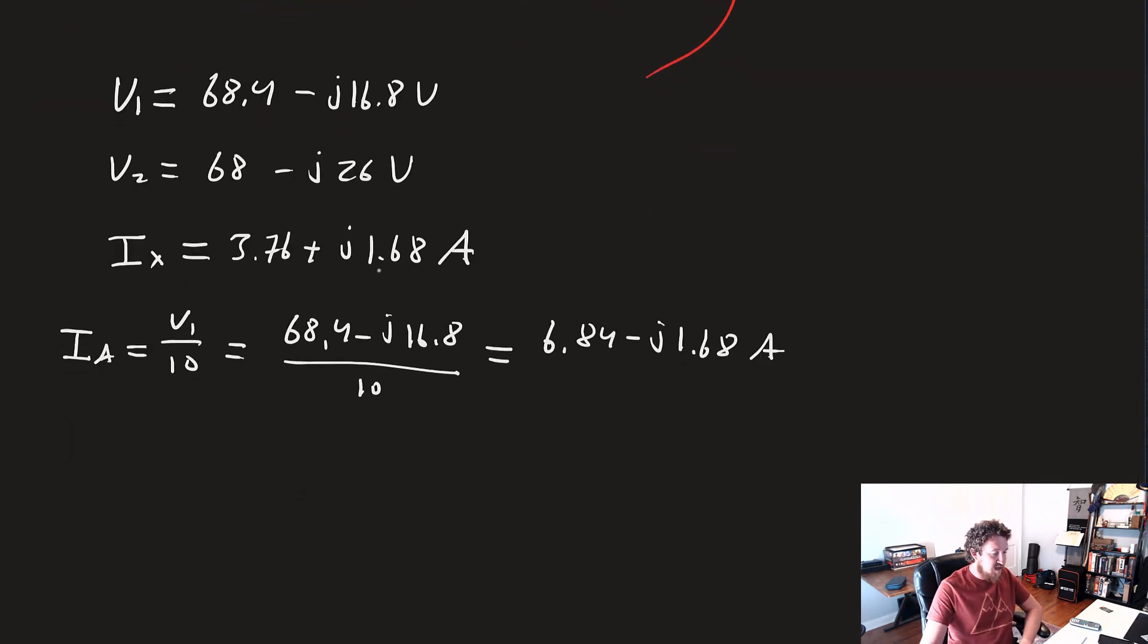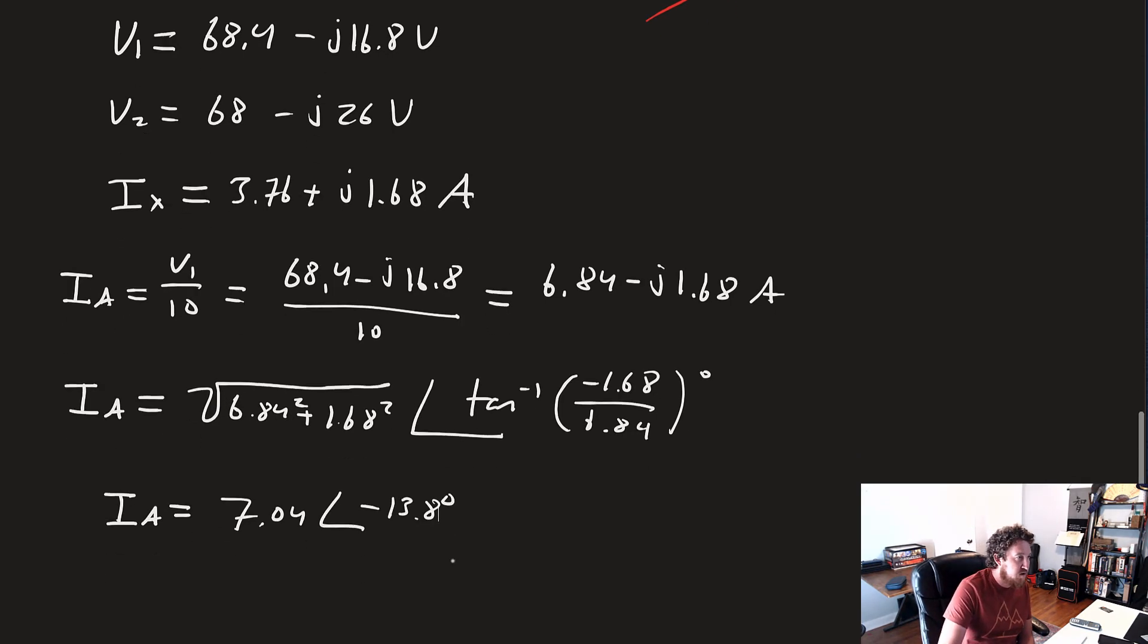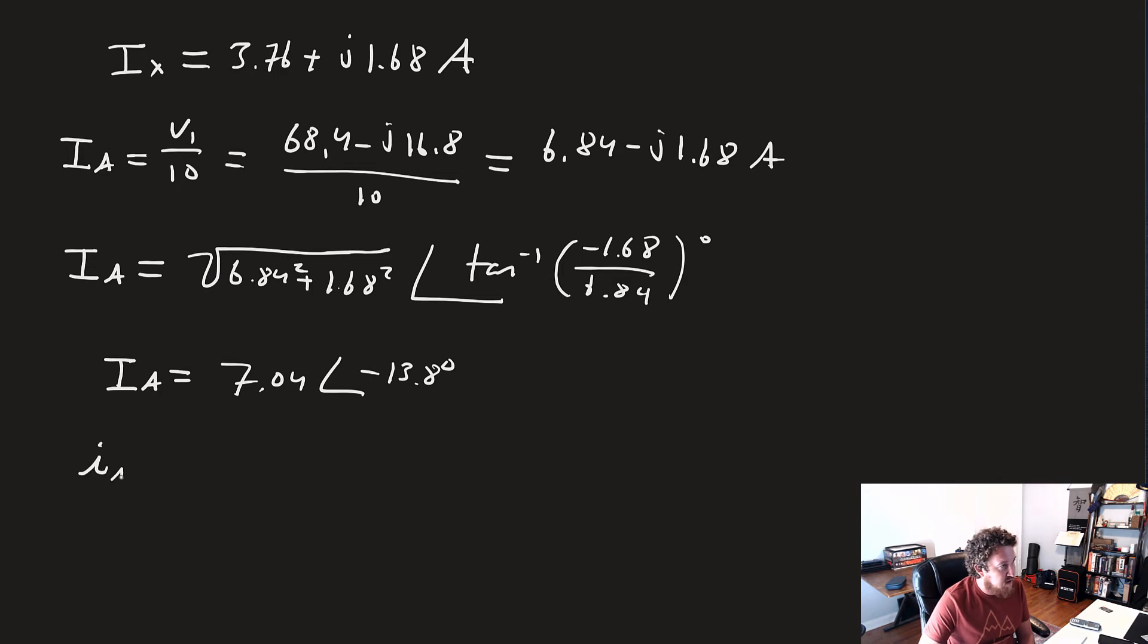Before we can convert it into its steady state form, we need to first convert it into its polar form. That'll be the square root of 6.48 squared plus 1.68 squared at an angle of inverse tangent of minus 1.68 over 6.84 degrees. That gives us a phasor of 7.04 at an angle of minus 13.8 degrees. So now we can find our steady state form: Ix of A of t equals 7.04 times the cosine of 500t minus 13.8 degrees in amps.